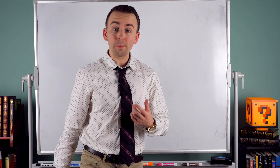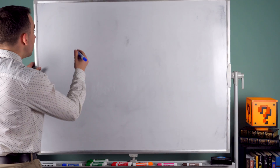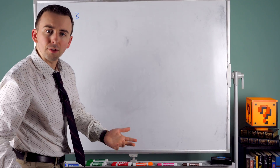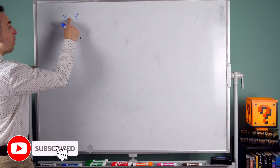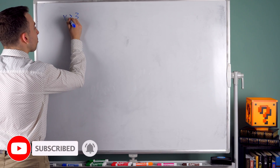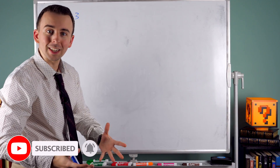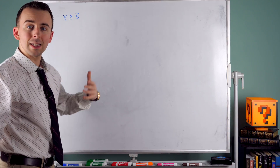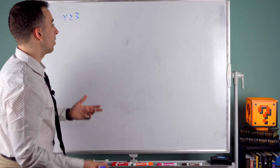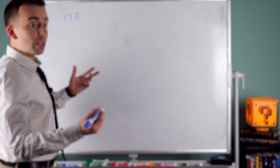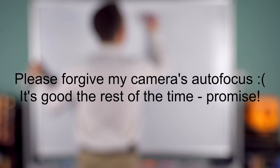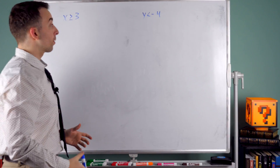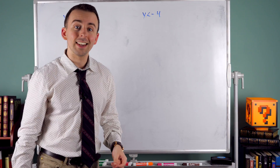Hey there, we've talked about inequalities, right? We realized x doesn't always have to be equal to 3. x could be greater than or equal to 3 — we don't need that perfect equality. This refers to numbers that are 3 and numbers that are greater than 3. That's pretty cool. We could also write something like y is less than negative 4, which refers to all numbers that are less than negative 4.